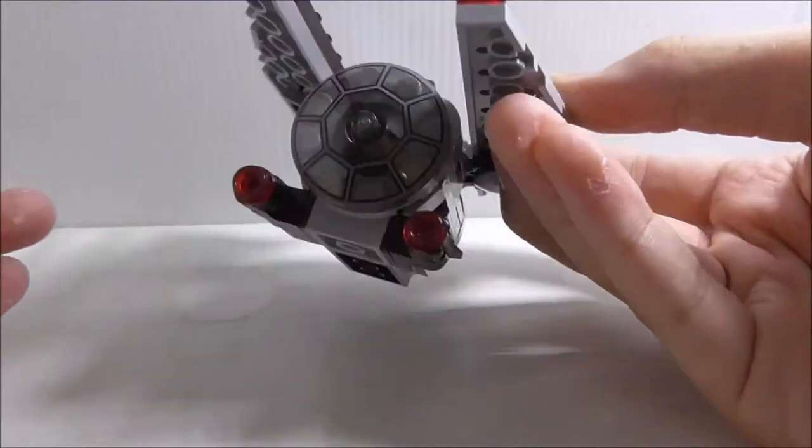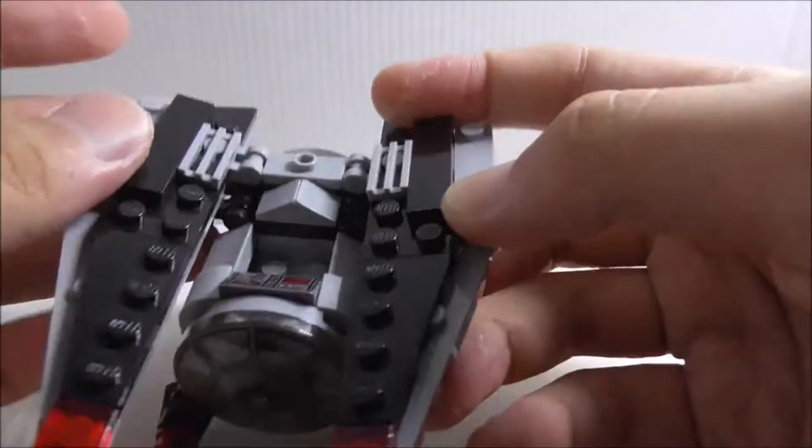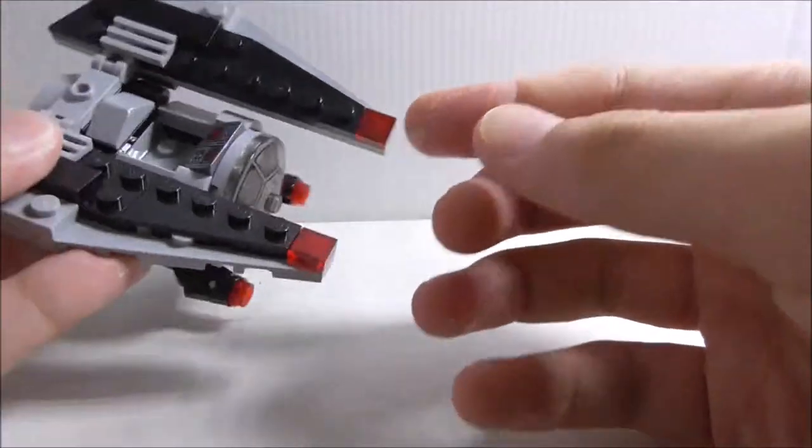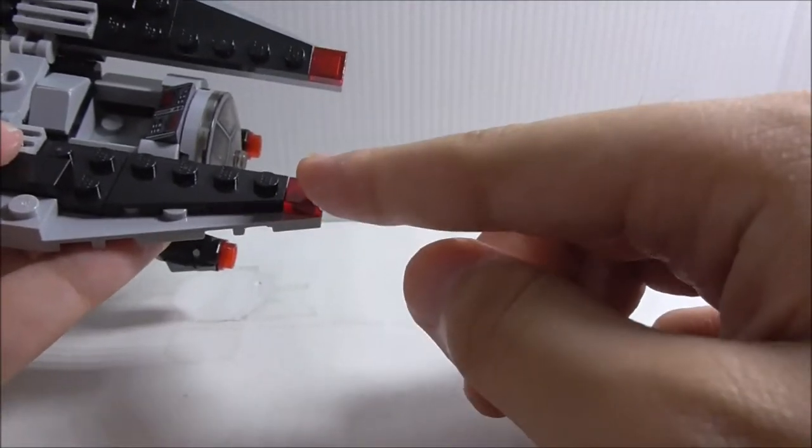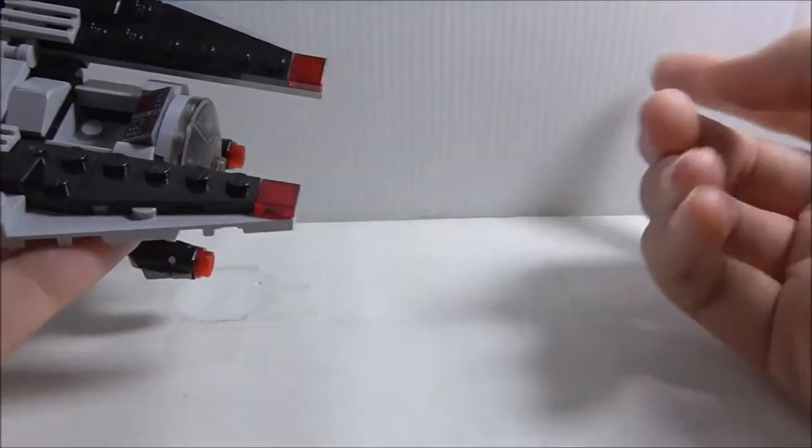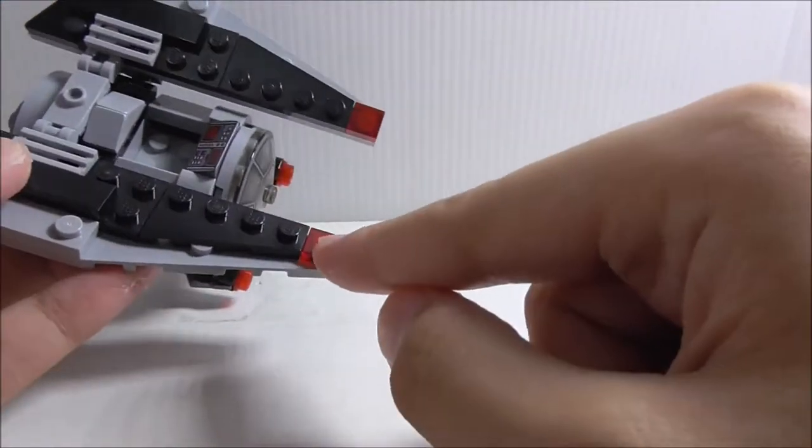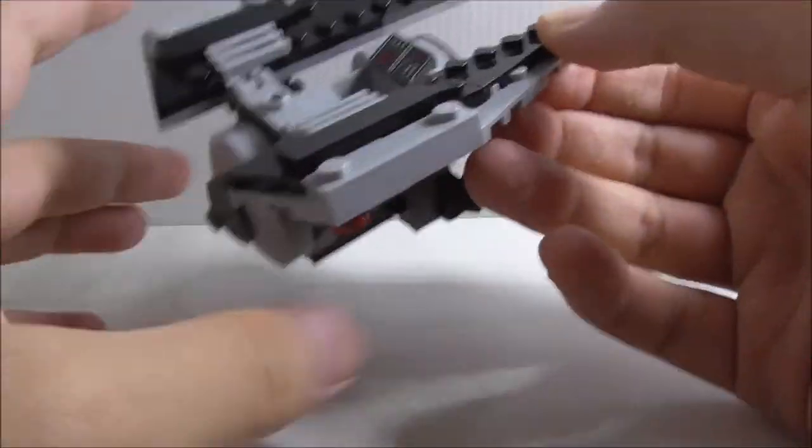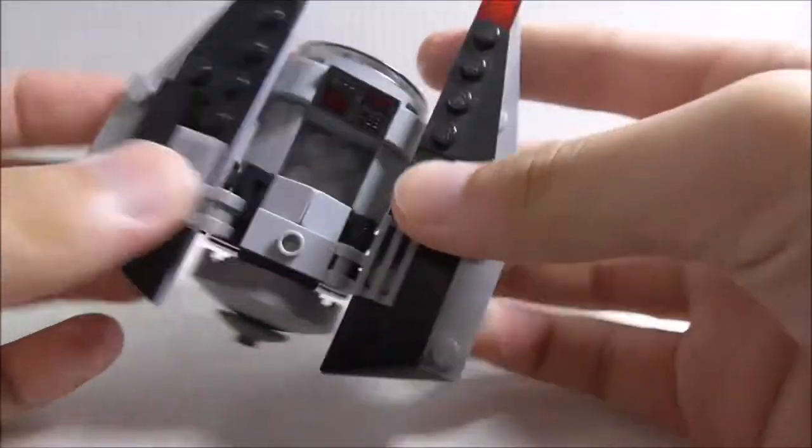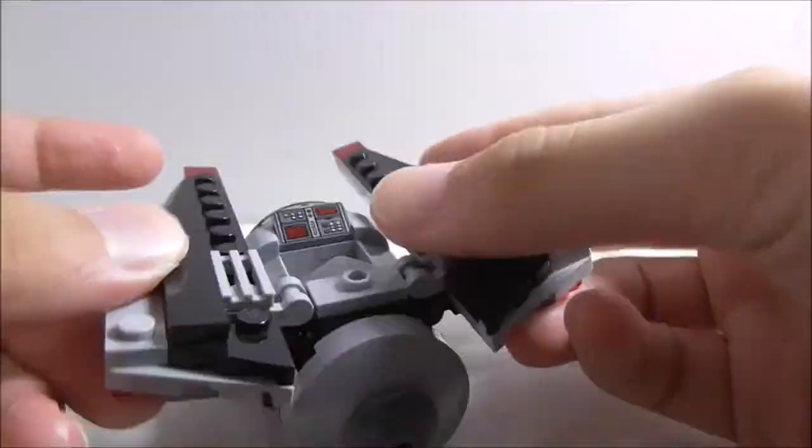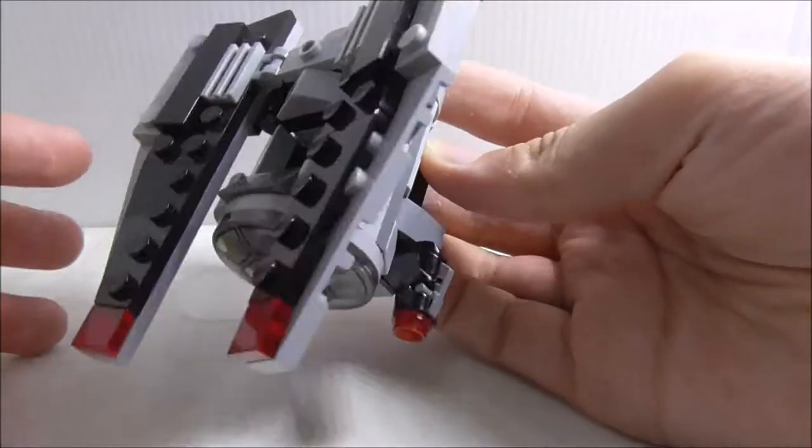The wings here can be angled into whatever attack mode. In the movie they have blaster cannons on the wingtips, so I'm not sure why they didn't include it. You just have this top piece here. It's pretty basic but at a nice angle and looks great.